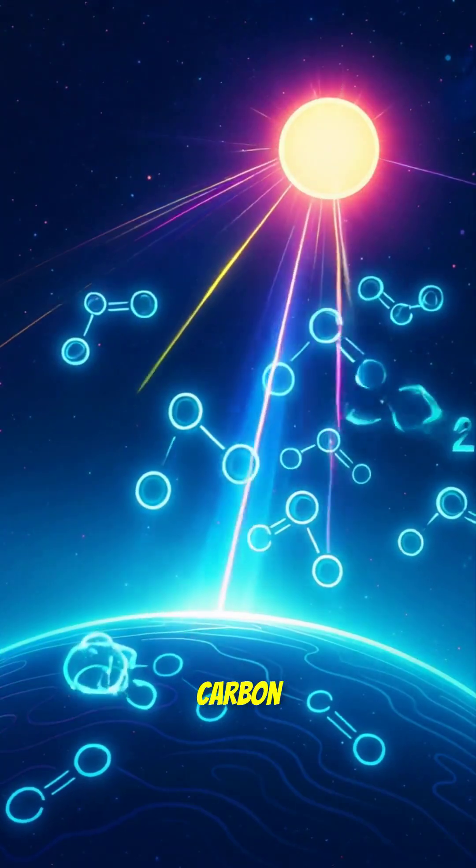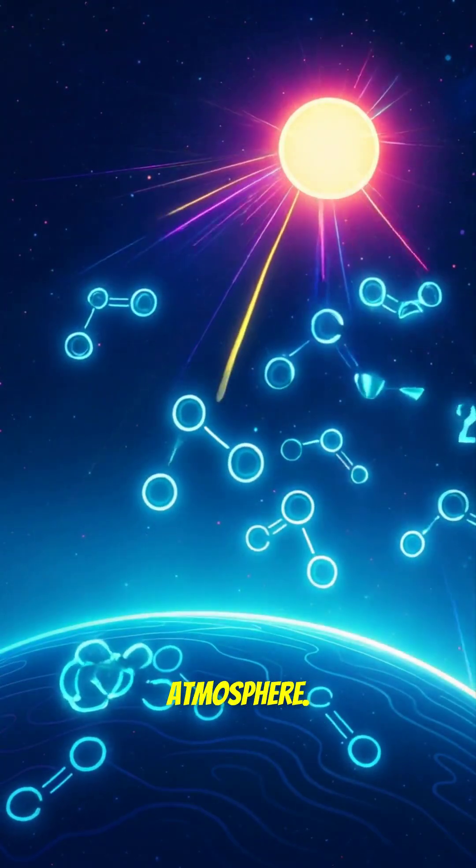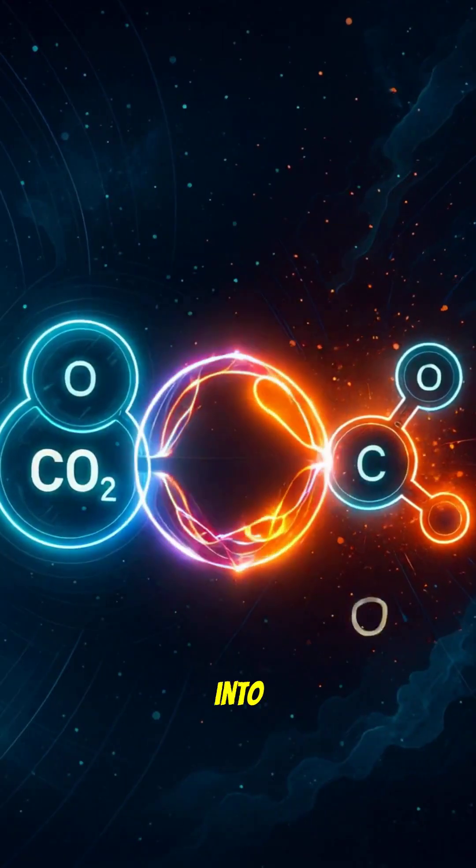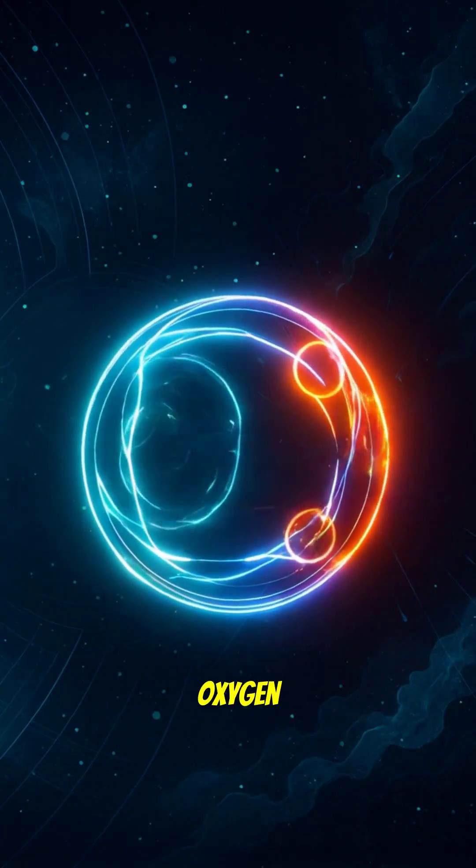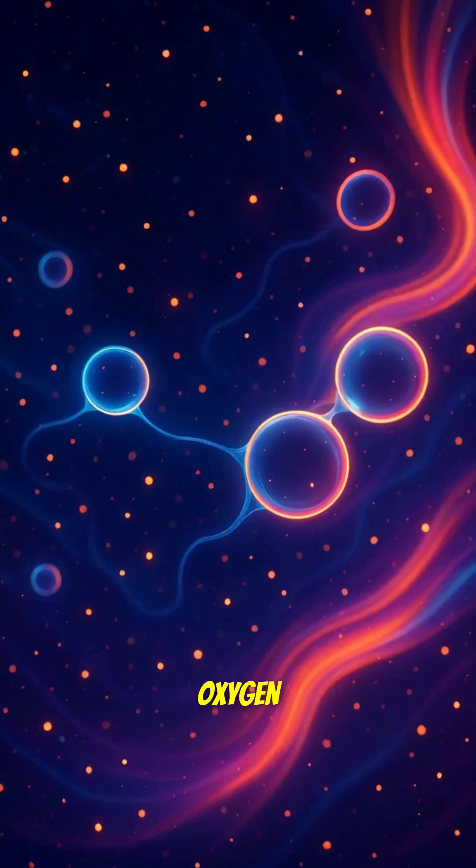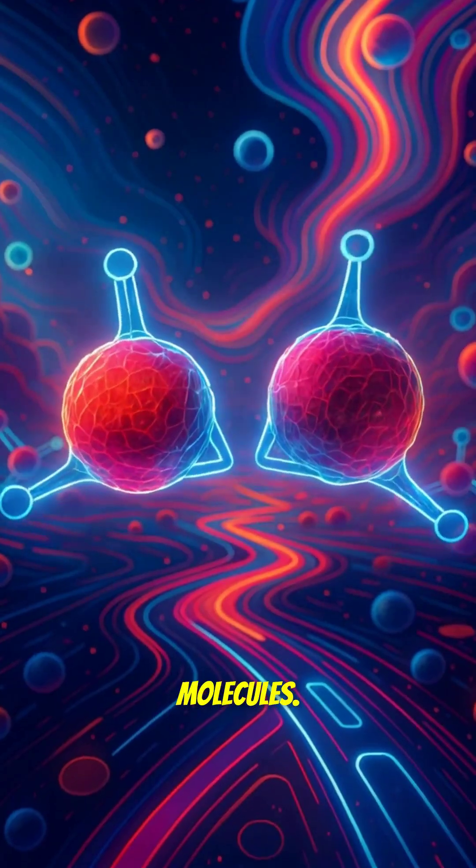On some distant alien worlds, UV light from a star zaps carbon dioxide in the upper atmosphere. This splits the CO2 into carbon monoxide and free oxygen atoms. Those free oxygen atoms recombine to form O2 molecules.